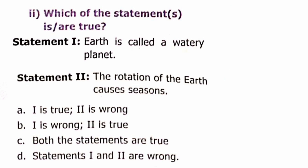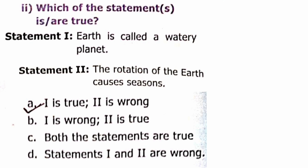Question 2: Which statement is true? Statement 1: Earth is called a watery planet. Statement 2: The rotation of the Earth causes seasons. Statement 1 is true. Statement 2 is false — rotation causes day and night, not seasons. The correct answer is A (only Statement 1 is true).